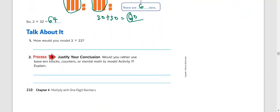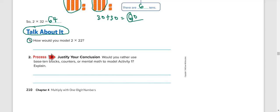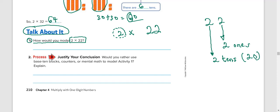So this one says, talk about it. The question is asking you, how would you model 2 times 22? Just as we did the other time. First, you know that with these 2, it means there will be 2 groups. And in each group, since it is 22, we have, so that will be 2 1's and 2 10's. That is 20, which is 20. In 2 groups.